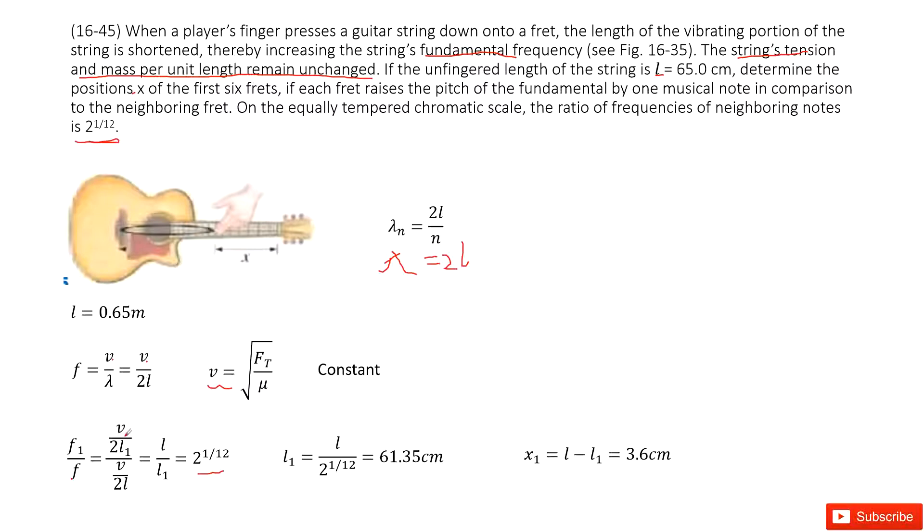So f1 is replaced by v over 2L1. f is replaced by v over 2L. v and v are constant. 2, 2 is a constant. So we get the ratio look like this one. L over L1 is this number.